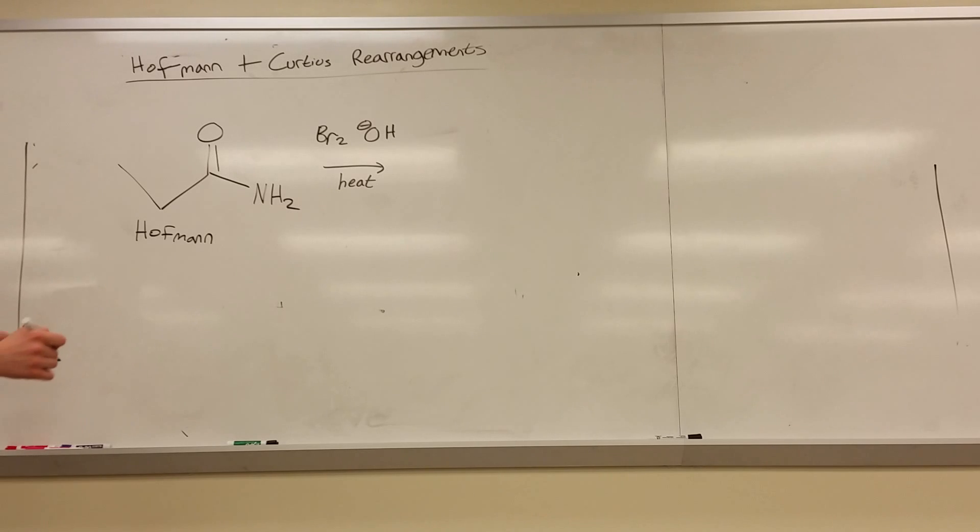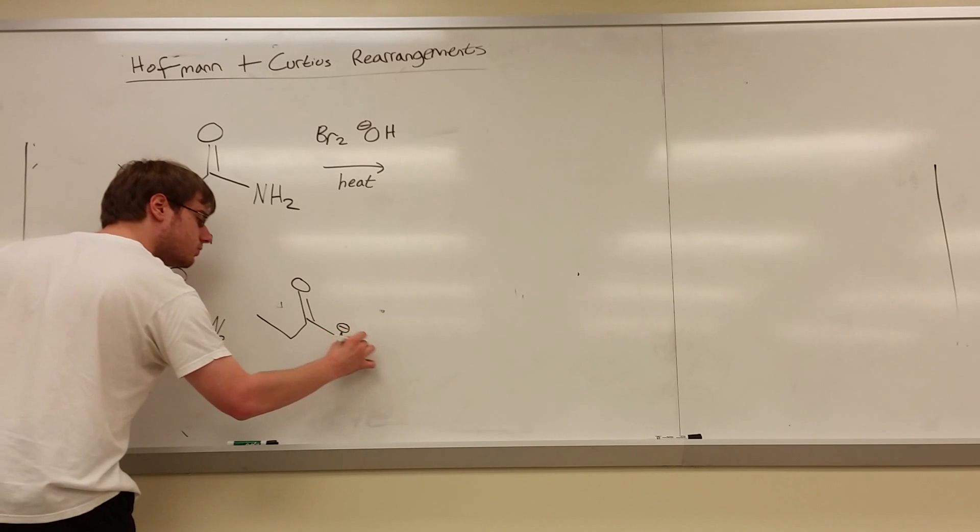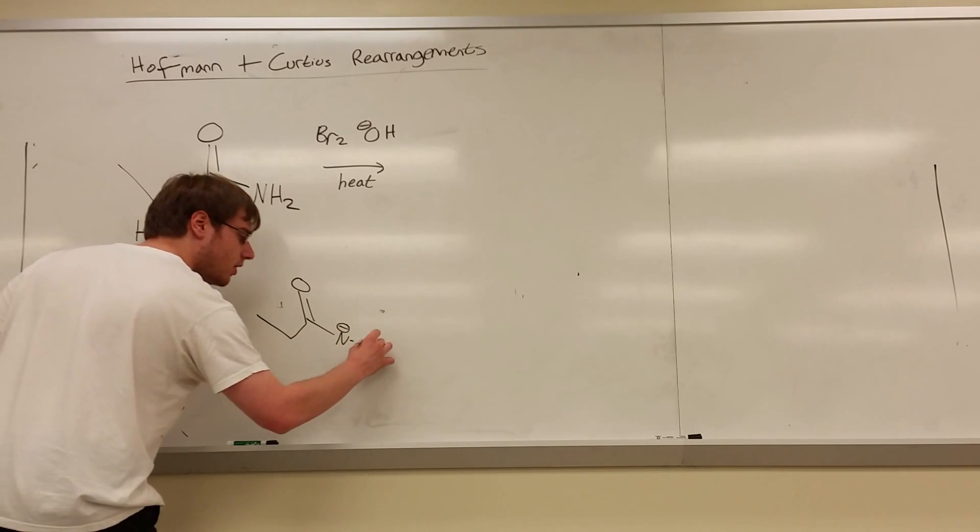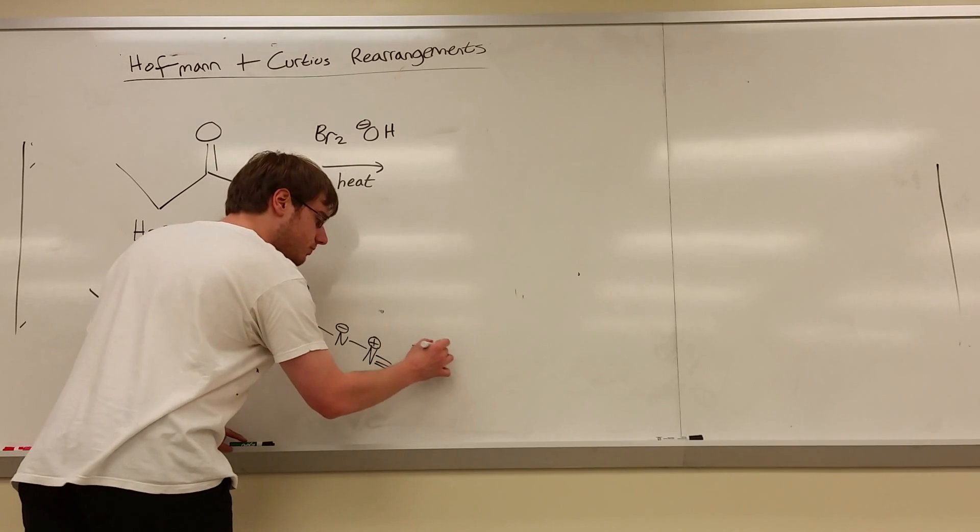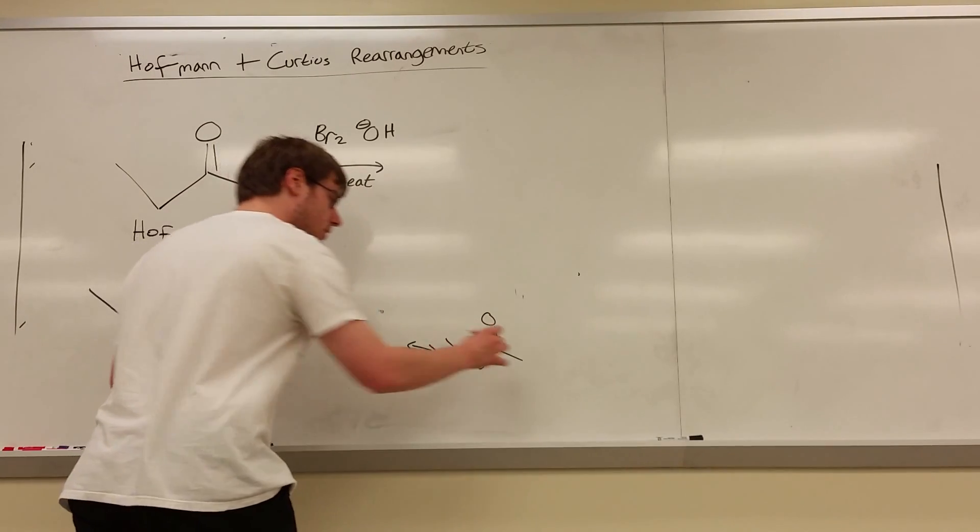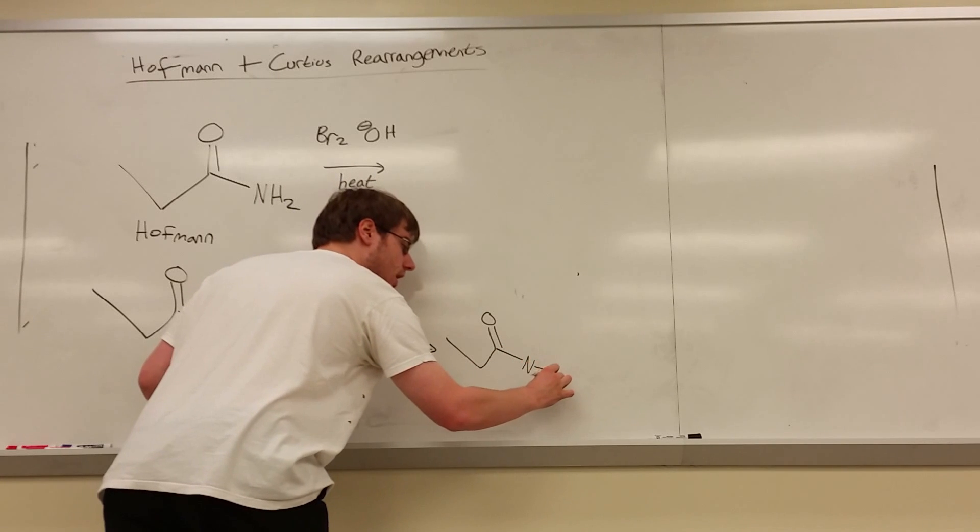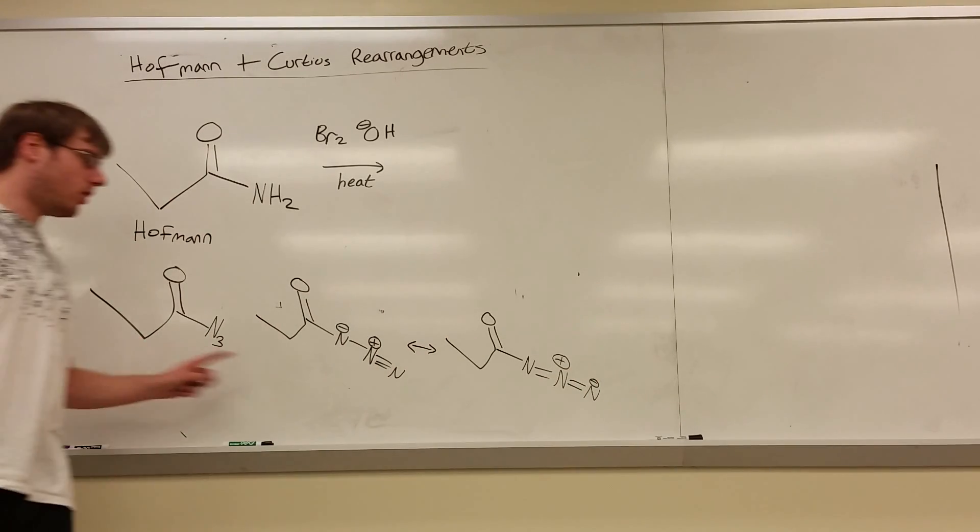The other rearrangement you will see is very similar in the way the reactant looks. Still a carbonyl, but rather than NH2, you have N3. And they will draw N3 one of three ways: either N minus single bond N plus triple bond N, or they'll draw the resonance structure where it is double bond O, neutral, double bond N positive, double bond N minus. The Curtius rearrangement will look like one of these three.